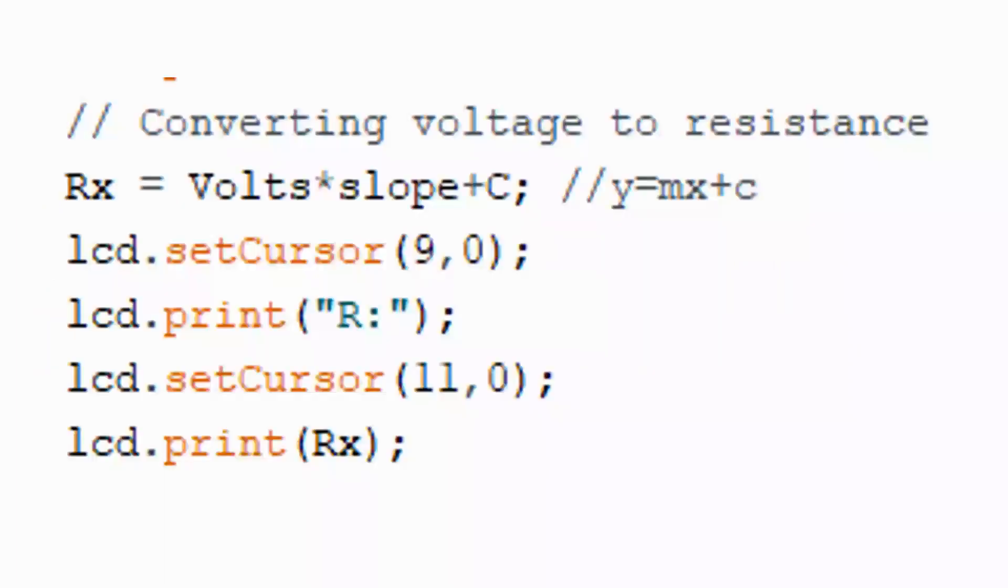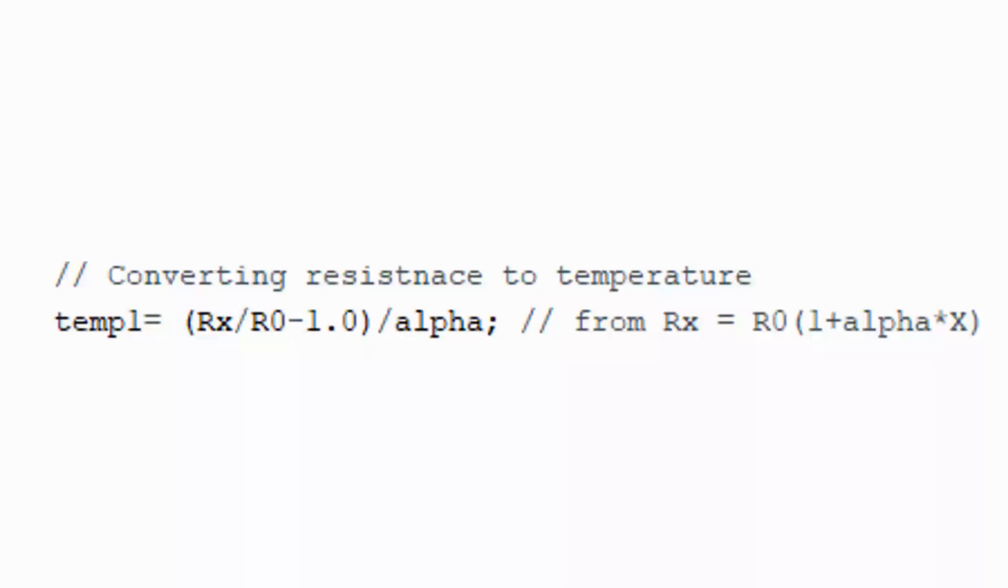After that, this voltage is converted to resistance using formula Rx equals volt times slope plus c, that is y equals mx plus c, as we already calculated the value of slope and constant c. This value is displayed over LCD. We can convert this resistance into temperature: temp1 equals (Rx by R0 minus 1.0) divided by alpha. This formula is also taken from datasheet.